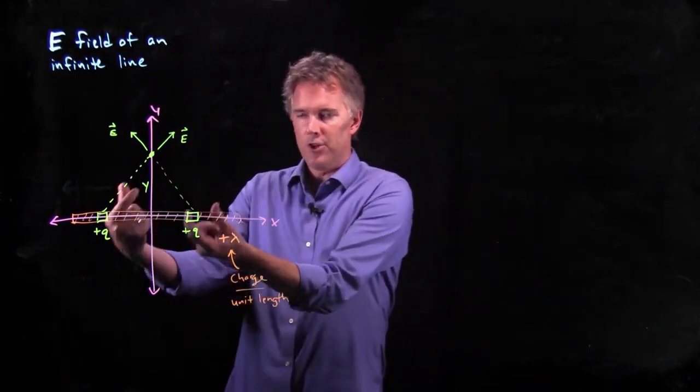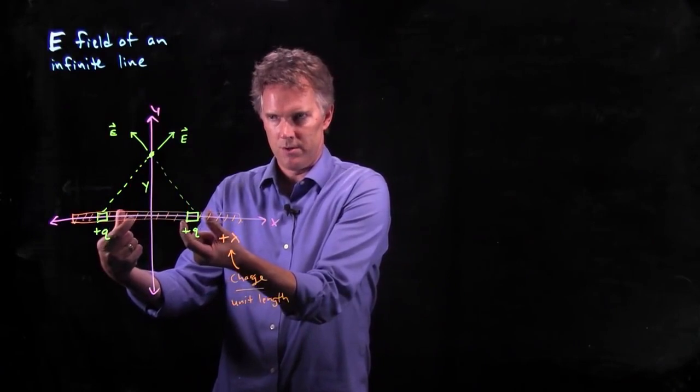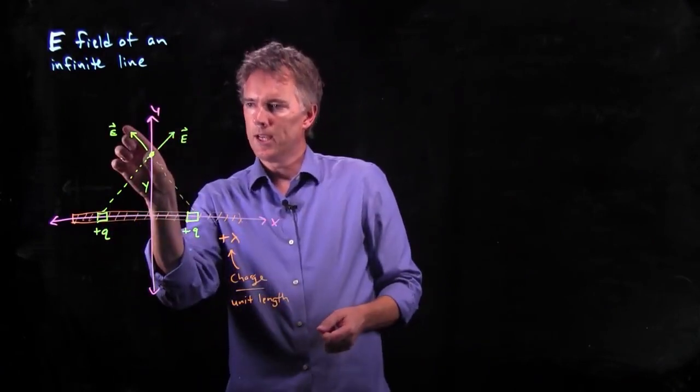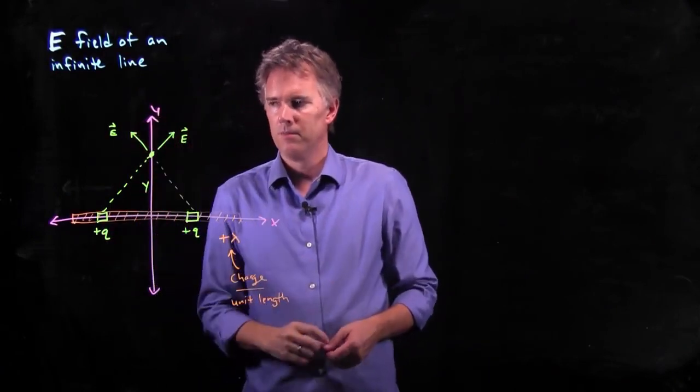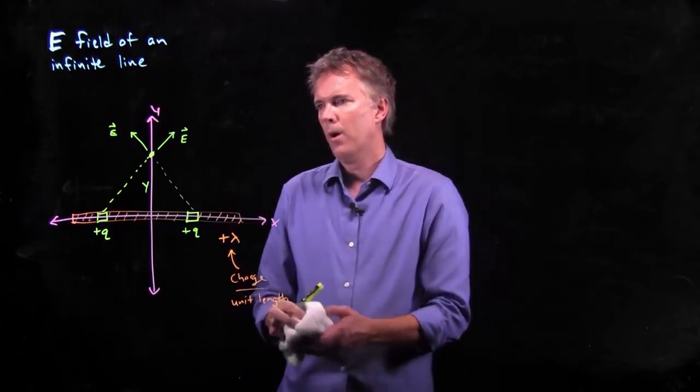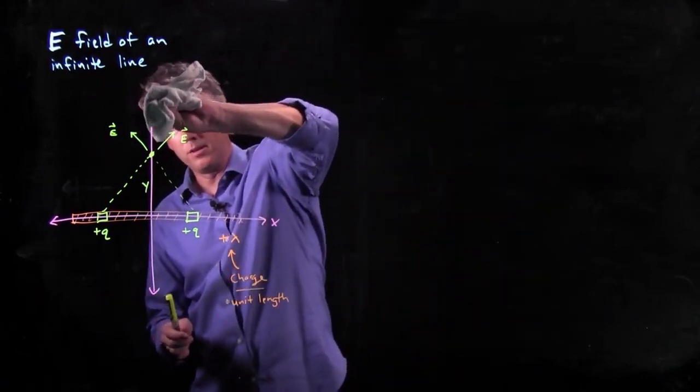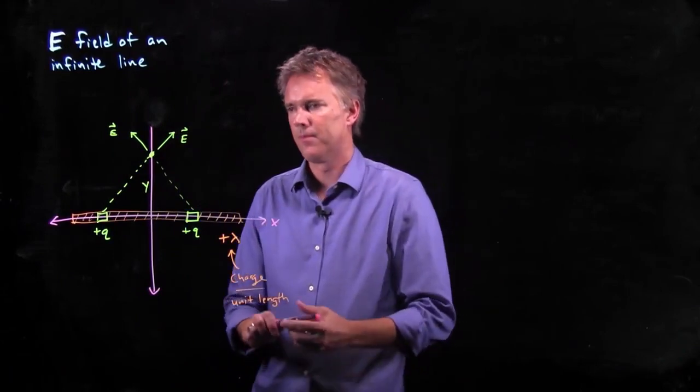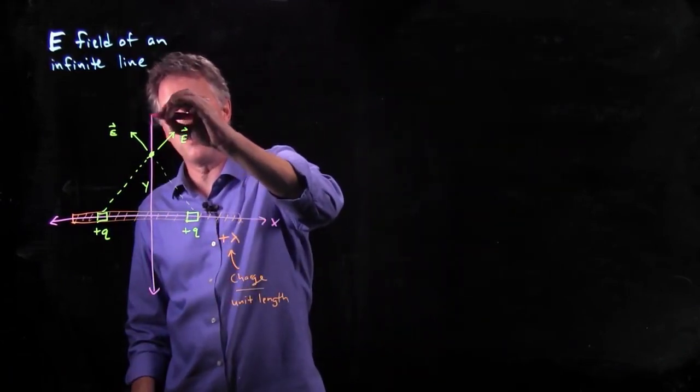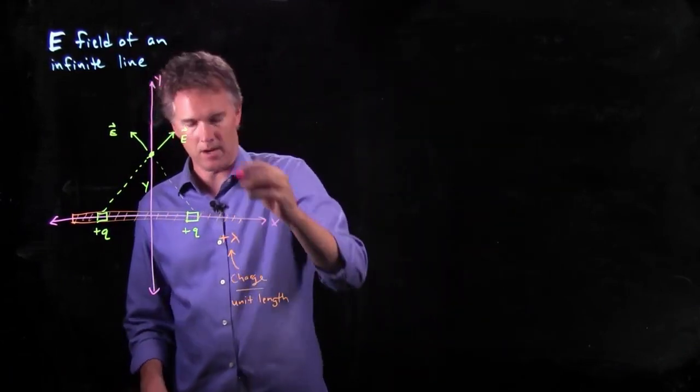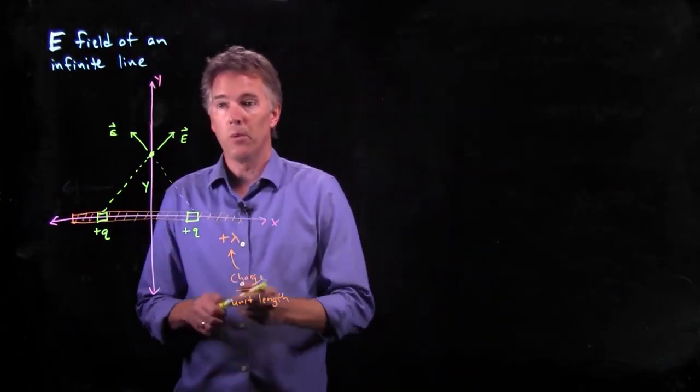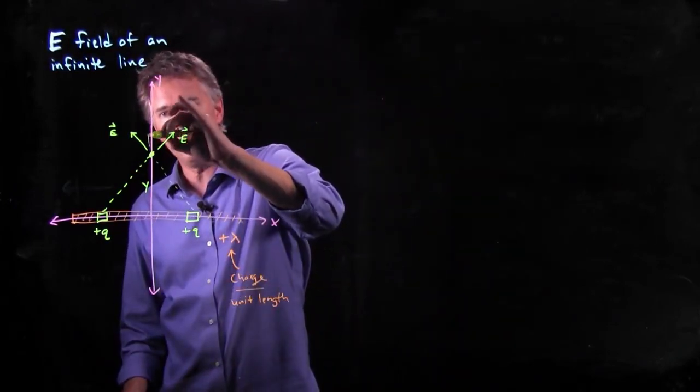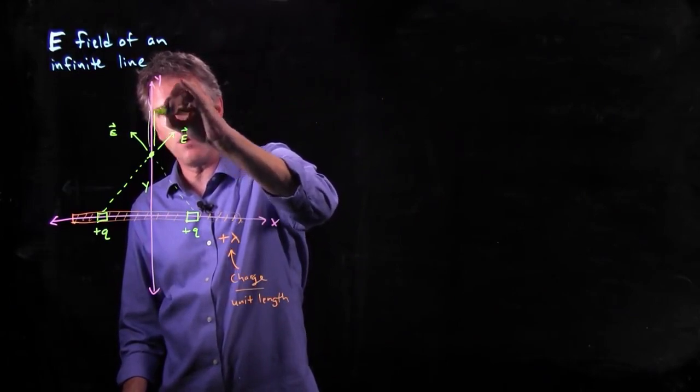So if I take just those two pieces of charge, and now I look at the net field up here, what do I get? Well, the horizontal components are going to cancel. The vertical components are going to add. We'll make our axis a little bit longer there. And so we're going to get a net electric field that is going up.